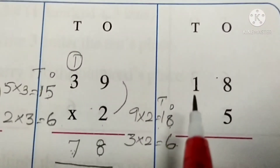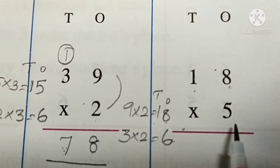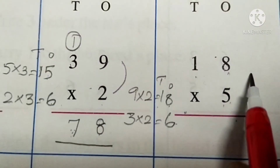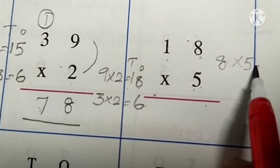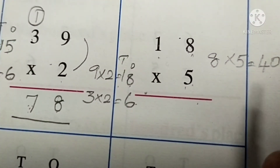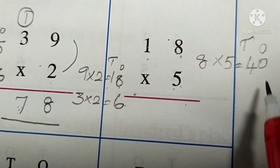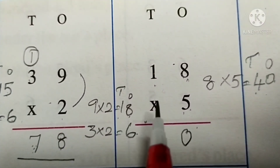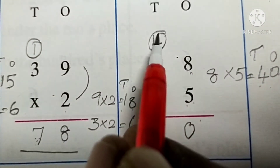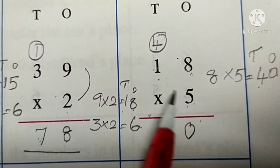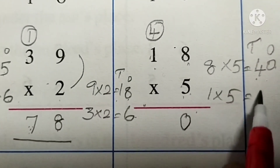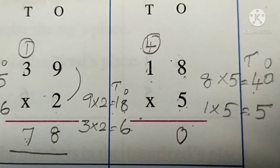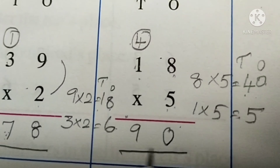Next, eighteen multiplied by five. First, multiply the numbers at the ones place — eight multiplied by five, eight fives are forty. Write zero under the ones place and carry four tens to the tens place. Multiply the numbers at the tens place — one multiplied by five, one five is five. Add five plus four equal to nine. Write nine here. So the answer is ninety.